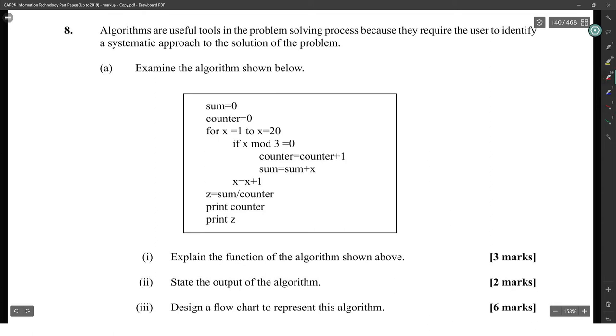It is setting sum to zero, counter to zero, and it's going to go from x equals 1 to 20. So we're going 20 times. We're checking to see if x mod 3 is equal to zero. Mod is finding the remainder of a division. So if you divide by three and get a remainder of zero, that means it's a multiple of three. Every time we find a multiple of three, we're carrying up our counter by one and adding to the sum.